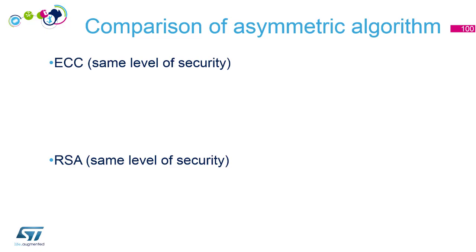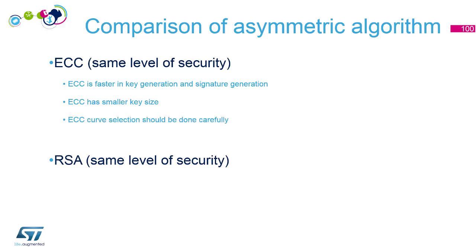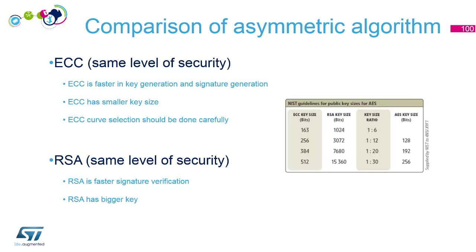For the same level of security, ECC is faster in key generation and signature generation — that means when you are using the private key. ECC has a smaller key size, really really smaller, and for embedded systems it could be a key point. Take care about the curve selection for ECC — this should be done really carefully, as some curves are more adapted to one task than another. For RSA, it is faster in signature verification but has a really bigger key.